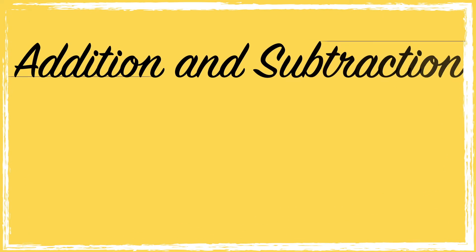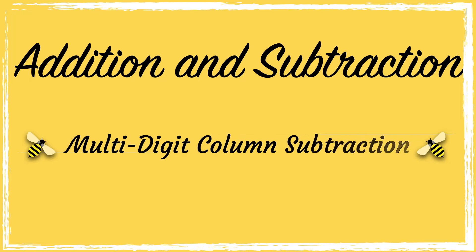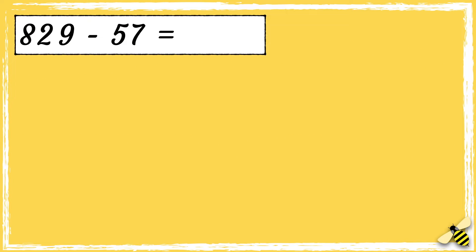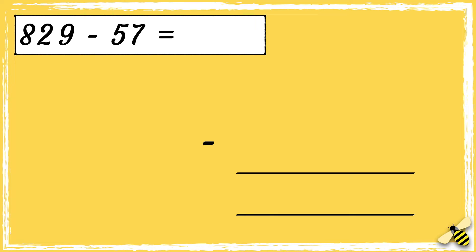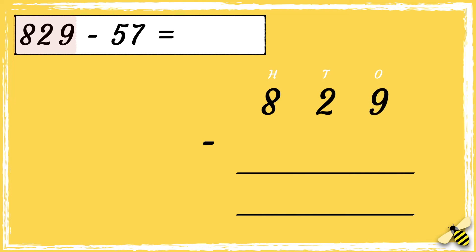In today's video we're going to do multi-digit column subtraction. Here is a number sentence: 829 take away 57. It's really important to line the numbers up correctly when we're doing column subtraction, so we have the ones, the tens, and the hundreds. We have eight hundreds, two tens, and nine ones, then we have five tens and seven ones. Now that we're set up, we're ready to subtract.